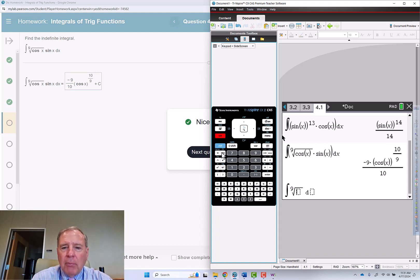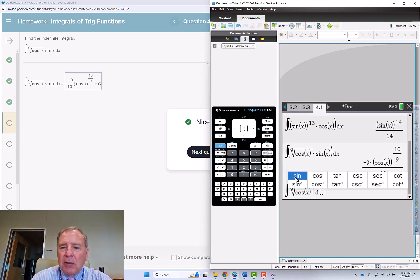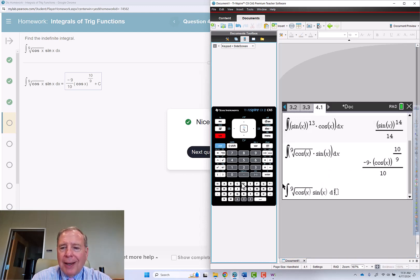Then tab. Put in cosine of x. Get out of the radical. Then put in sine of x. Tab dx.